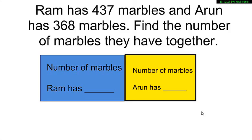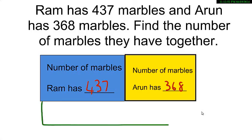Right here you can see a blue rectangle which says the number of marbles Ram has, so you can write the number of marbles he has is 437. The yellow rectangle says the number of marbles Arun has — he has 368.